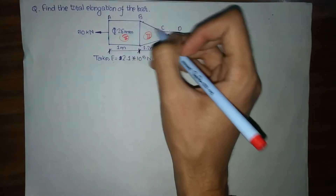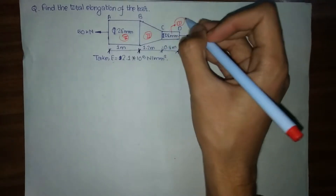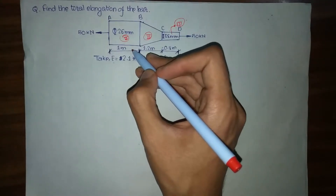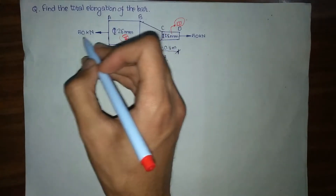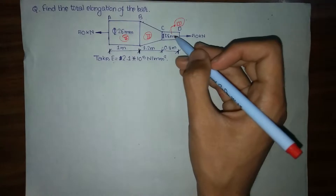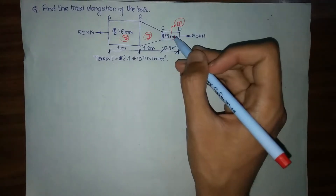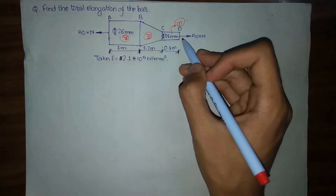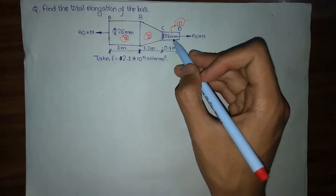Our first portion is a rectangular steel bar with diameter 26 mm, and a tensile force of 50 kN is acting at side A. For section CD, it is similarly another steel bar with length 0.8 meter, a tensile force of 50 kN acting at point D, and diameter of 18 mm.